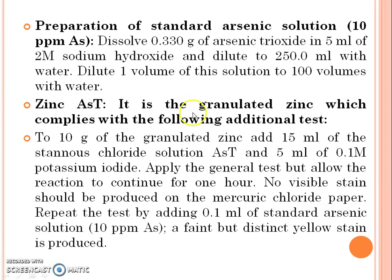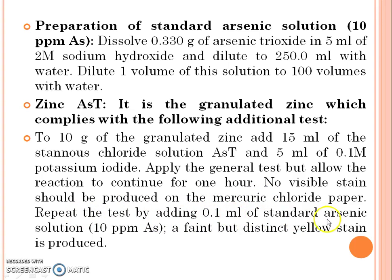Zinc: it is granulated zinc which must comply with the following additional test. To 10 g of granulated zinc, add 15 ml of stannous chloride solution and 5 ml of 0.1 molar potassium iodide. Apply the general test but allow the reaction to continue for one hour. No visible stain should be produced on the mercury chloride paper. Repeat the test by adding 0.1 ml of standard arsenic solution; a faint but distinct yellow stain should be produced.